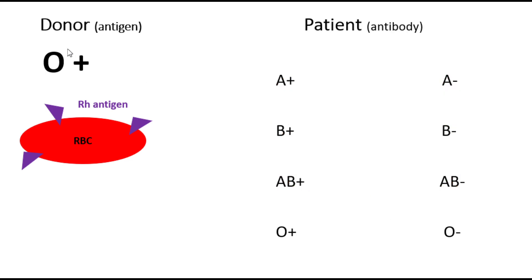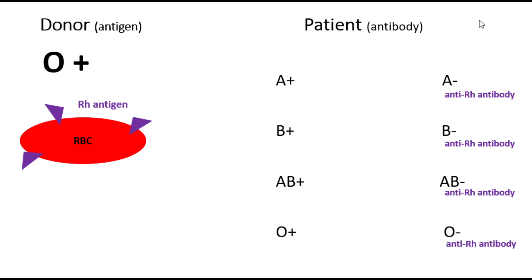Now, if you think about a donor who has O positive blood type, we know that in donors we pay attention to the antigens. The only antigen that the red blood cell of this donor has would be Rh factor. So when we focus on our patients, we just need to choose the patients that are okay with receiving Rh antigen. Clearly, individuals who have a negative blood type, because they can build antibody against Rh as soon as they are exposed to Rh factor, should be eliminated from this list.